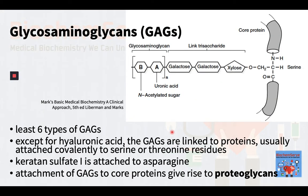At least six types of glycosaminoglycans exist, differing in the monosaccharides present in their repeating disaccharide units. Examples are chondroitin sulfate, dermatan sulfate, heparin, heparin sulfate, hyaluronic acid, and keratan sulfates 1 and 2. Except for hyaluronic acid, the glycosaminoglycans are linked to proteins, usually attached covalently to serine or threonine residues. Keratan sulfate I, however, is attached to asparagine.